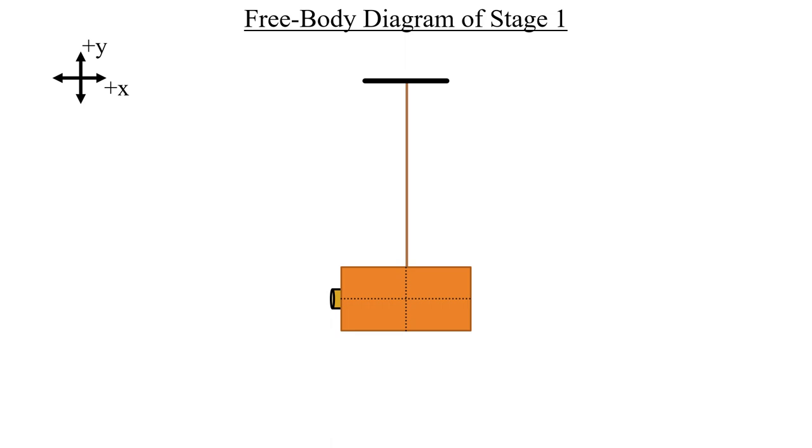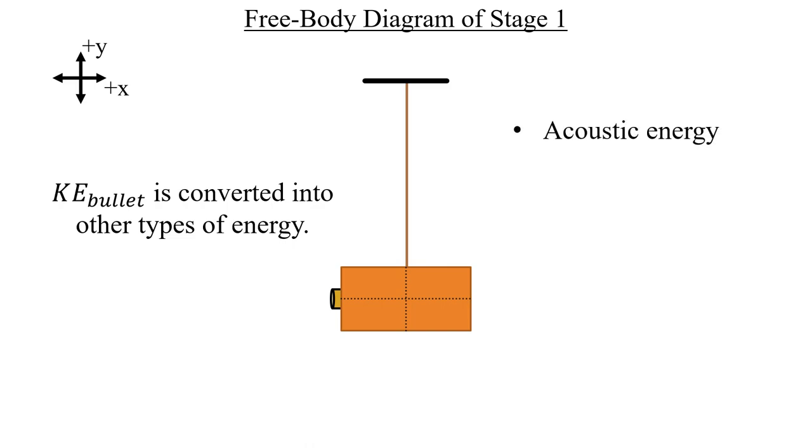The answer is that it's an internal force of kinetic friction that happens during the collision. We say that some of the bullet's kinetic energy is converted into other types of energy. What are those other types? Well, a major one is acoustic energy which is responsible for the sound of the collision. There's also thermal energy that's produced by that friction interaction which will raise the temperature of the block.